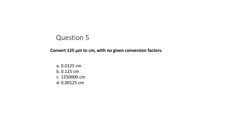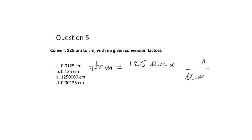Number five: let's convert micrometers to centimeters. We want to get the number of centimeters in 125 micrometers. I can do the conversion between micrometers and meters — either how many meters are in one micrometer (10⁻⁶) or how many micrometers are in one meter (10⁶). Either way, the answer works out the same.